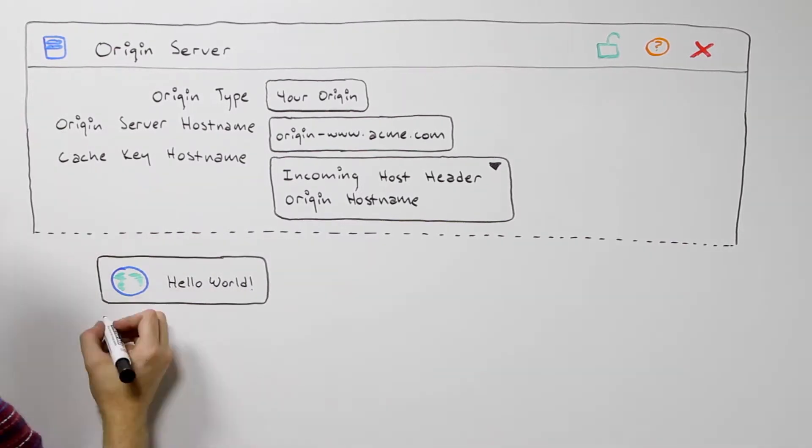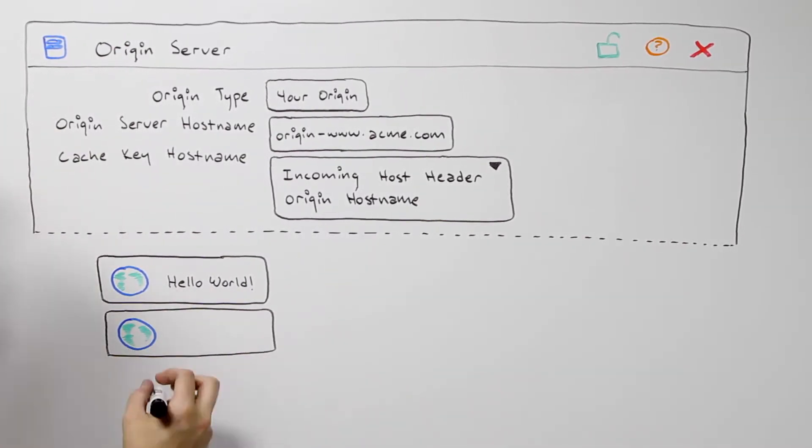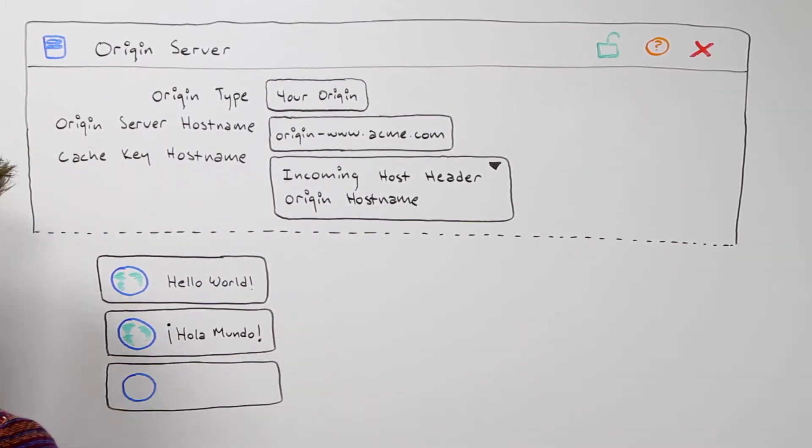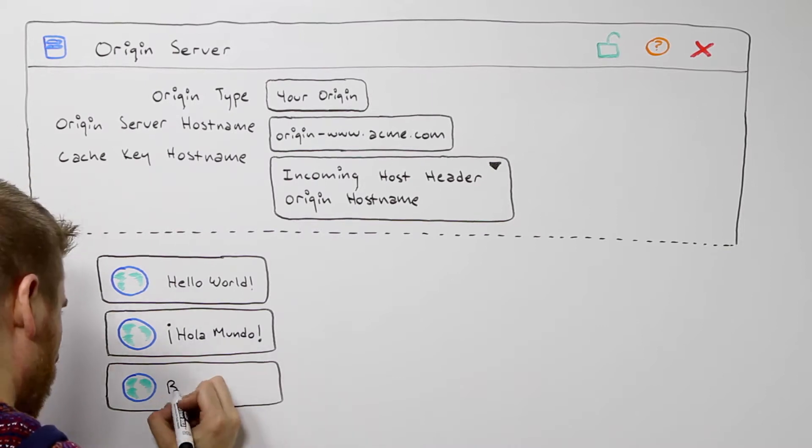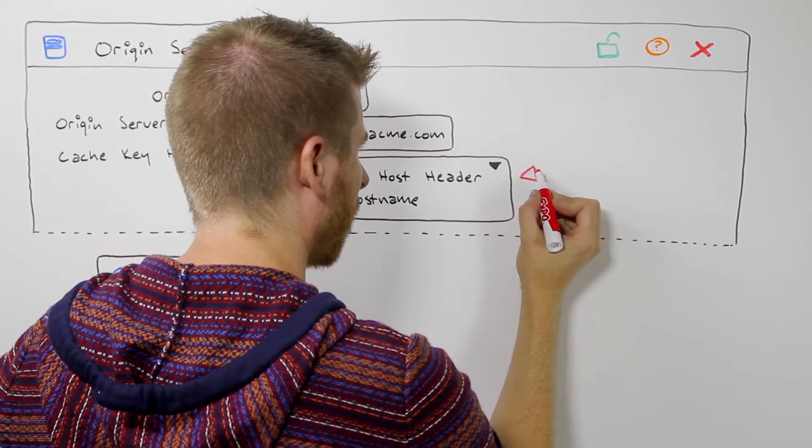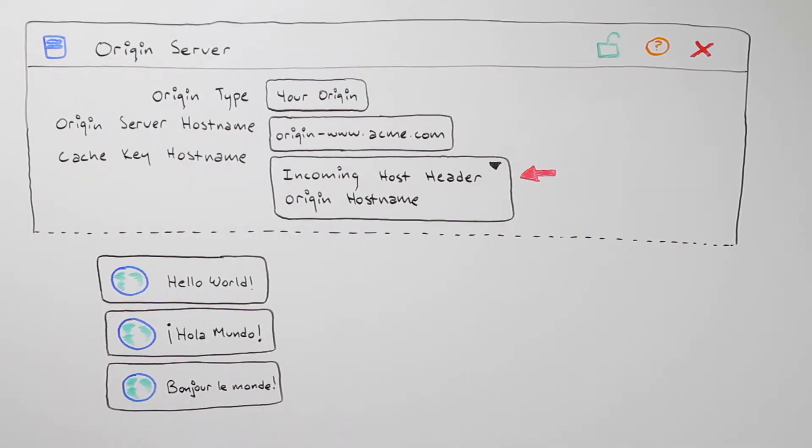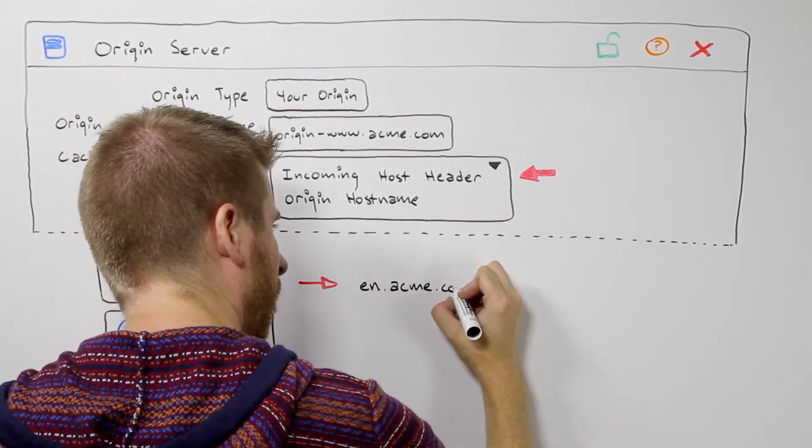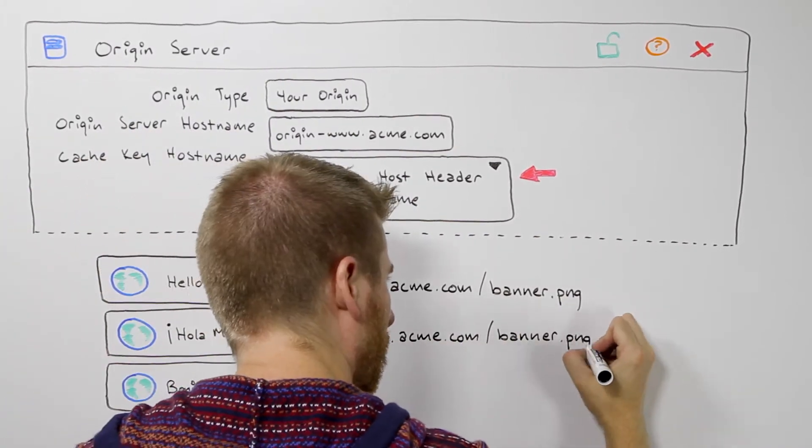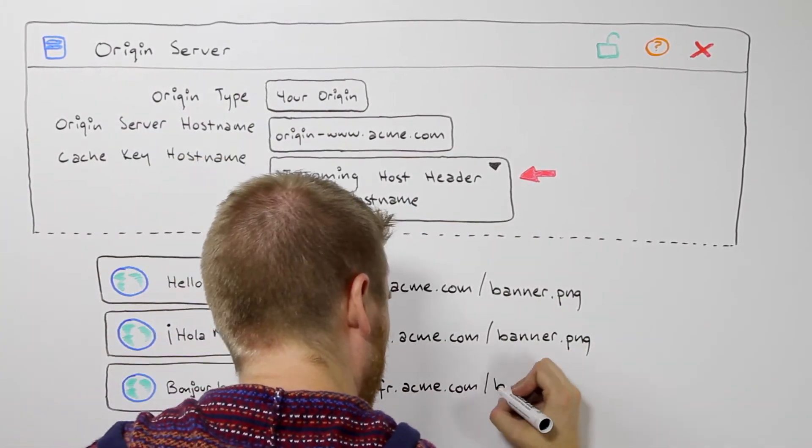First, let's say you have localized sites that serve different languages using different hostnames, but the same file structure. While you might put all these hostnames under one delivery configuration, the same file path would need to cache unique content appropriately. You'd want to set the cache key to incoming host header. This will ensure Akamai Edge servers treat a file such as banner.png differently for each of these domains.